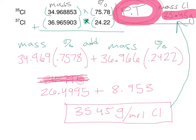For any problem you do, your final answer should equal something you'd find on the periodic table. Knowing how the problem is set up is half the battle — always take your mass and multiply by the percentage, take your mass and multiply by the percentage. If there's a third isotope, you do it again and add them all up, exactly the same as before.